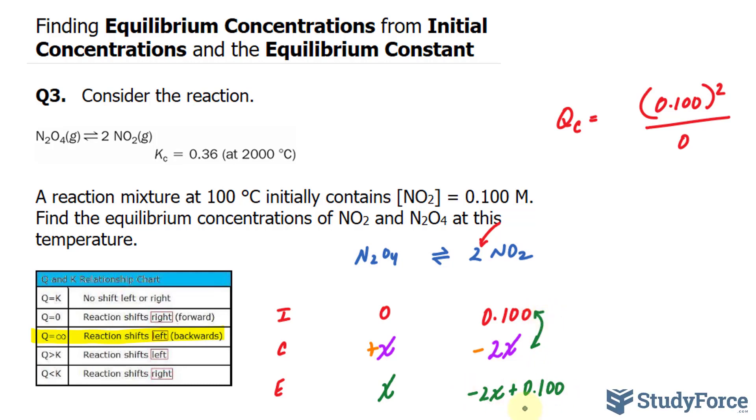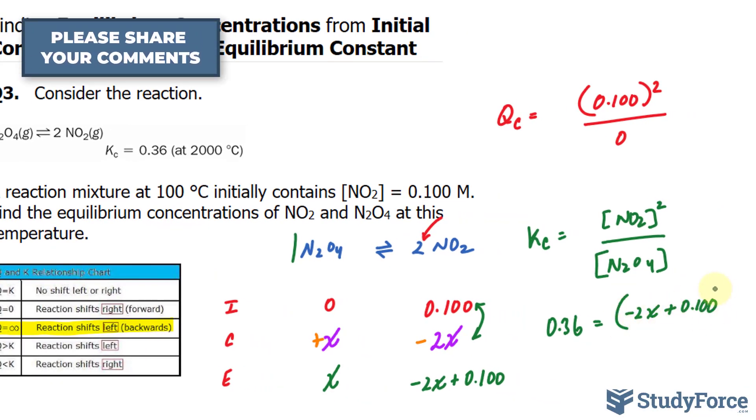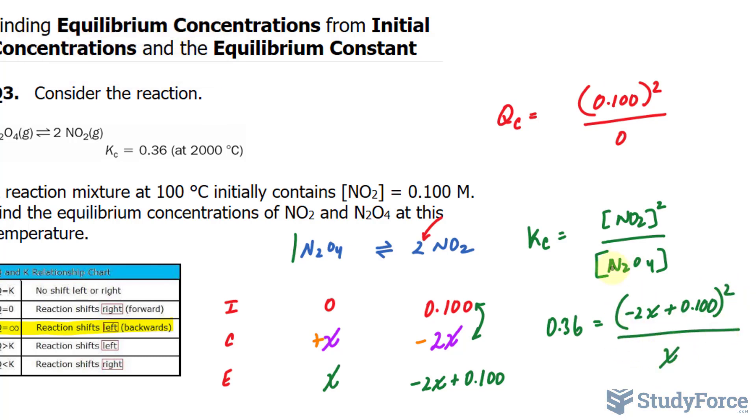So I added these together and I get this expression. Now I'll create the equilibrium expression. That's represented by KC. And I have the concentration of NO2 raised to the power of 2 over the concentration of N2O4. And that's being raised to the power of 1 because there's a coefficient of 1, but we don't need to show it. We've been given KC. It's 0.36. And we already found the expression for NO2. Its equilibrium concentration is represented as negative 2X plus 0.100. That's being raised to the power of 2 over X, the concentration of N2O4.